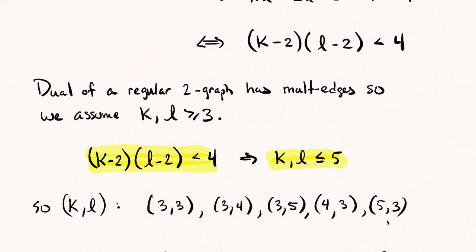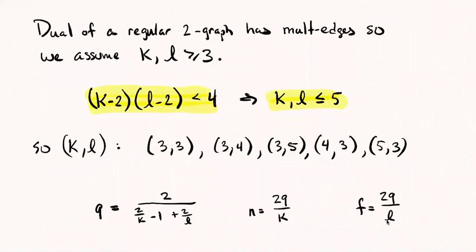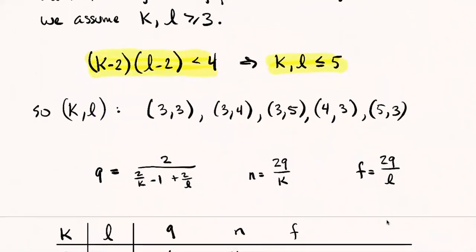The last thing to do is to put those things together. I need to go back up. I'm not going to scroll. I brought them down, but we had some expressions up there. You can pause the video and go back yourself. We had it written that q times this quantity, 2/K - 1 + 2/L, was equal to 2. So I'm just solving that for q. K and L determine q by that formula. And then once I know q, then q together with K determines n and q together with L determines f. Once you tell me K and L, like you tell me maybe they're both 3, then I'll tell you q, I'll tell you n, I'll tell you f. I'll tell you the size of this graph, the order of the graph, the number of faces.